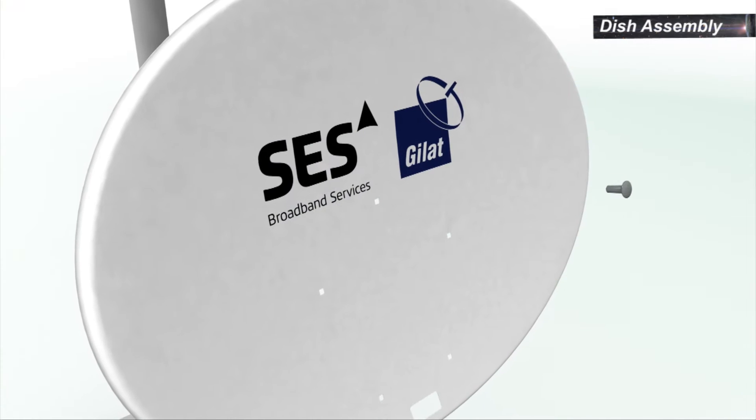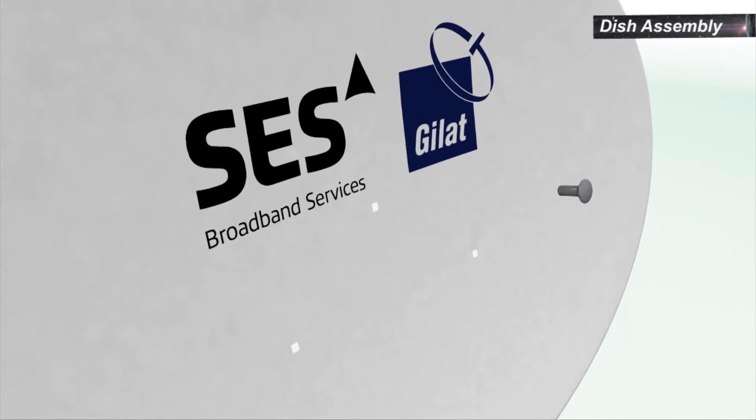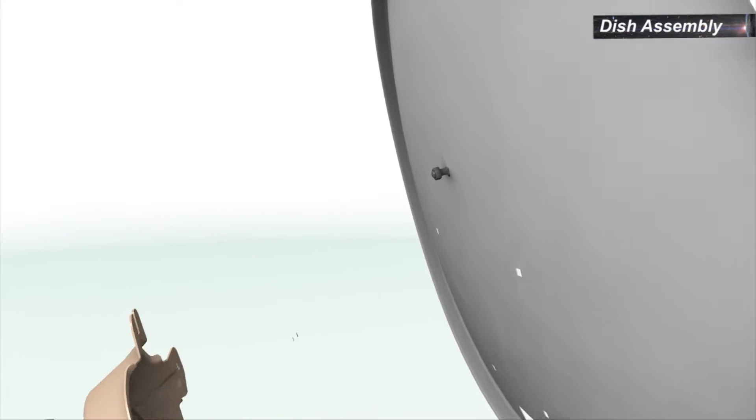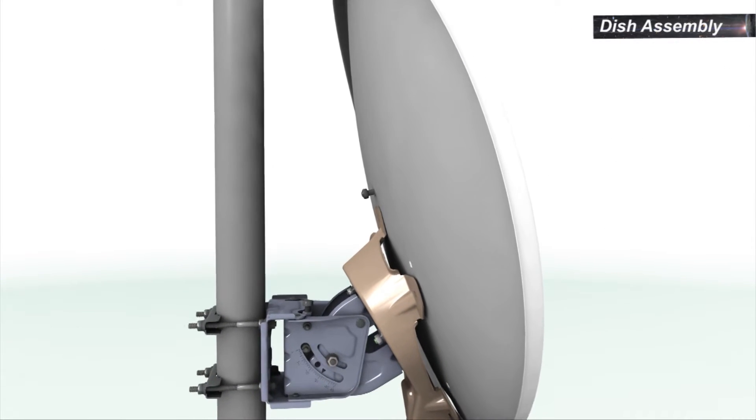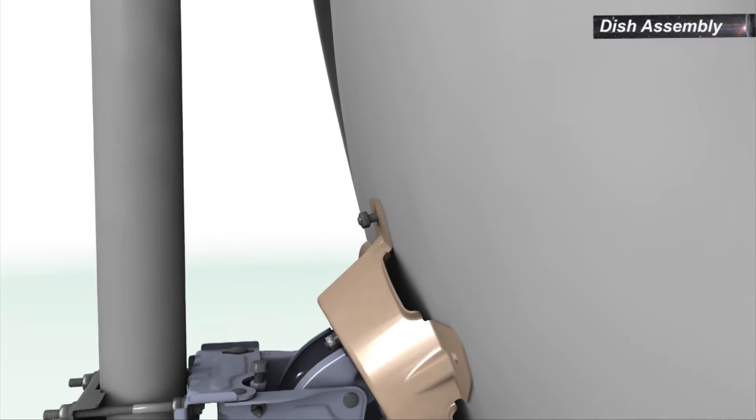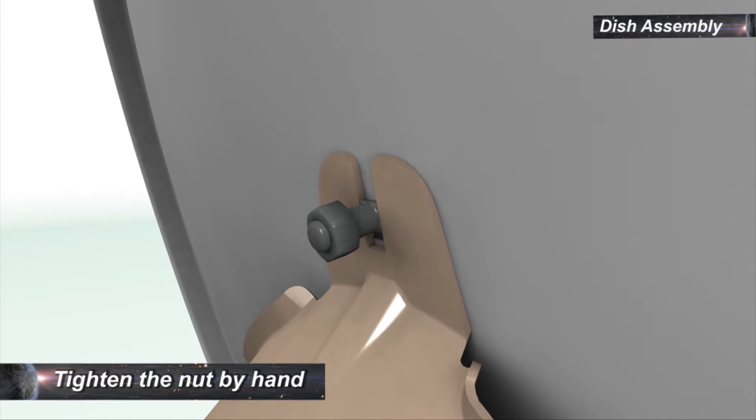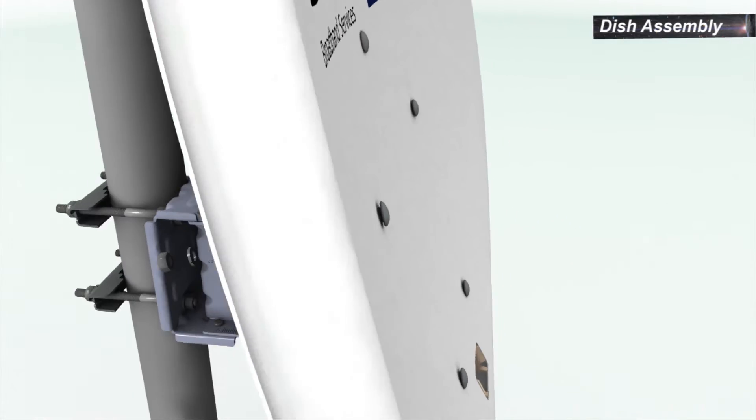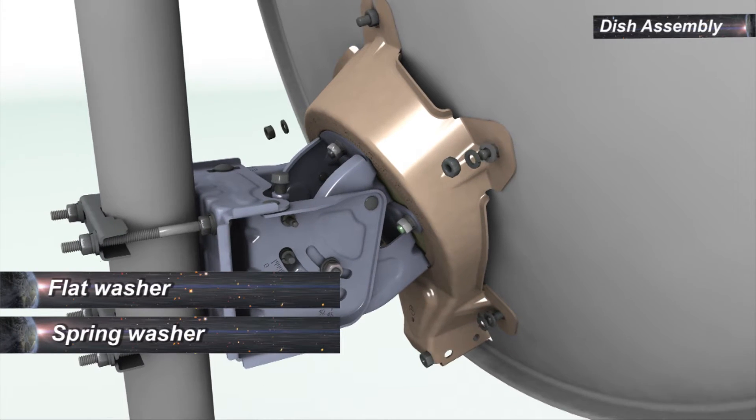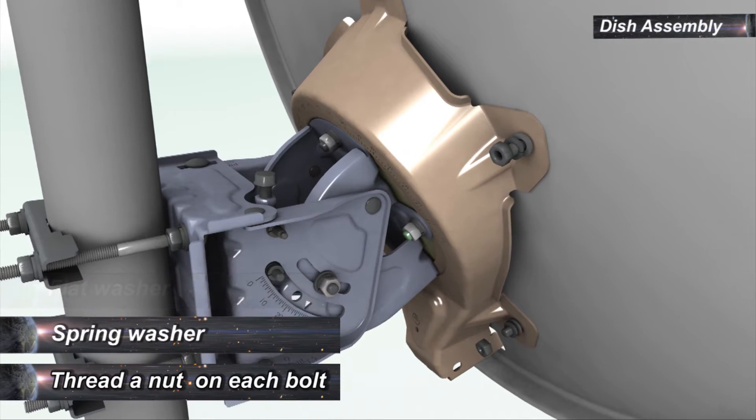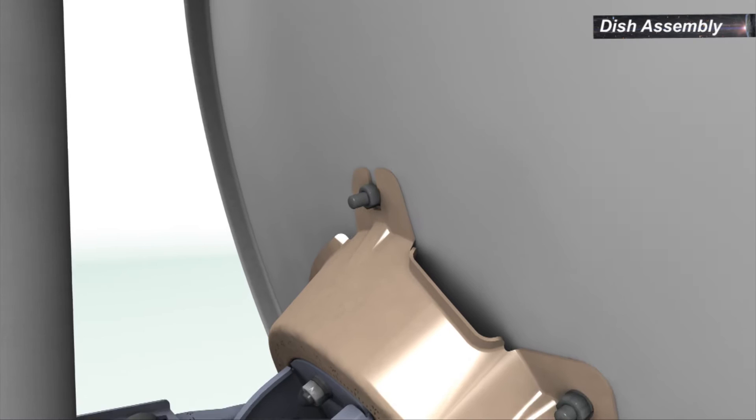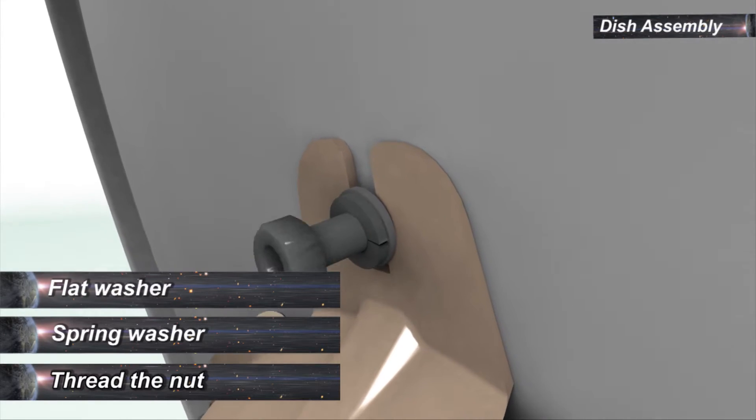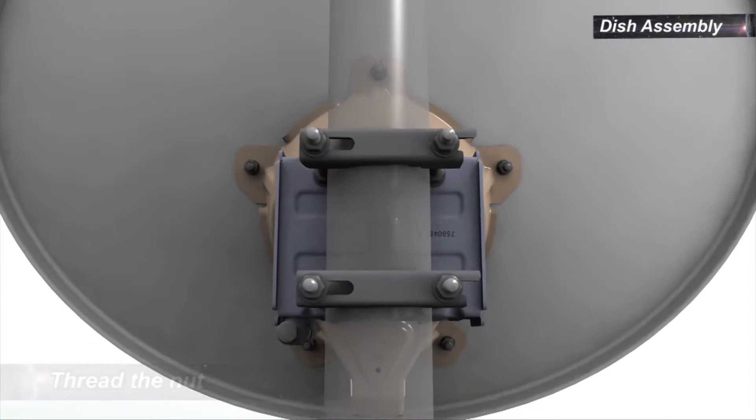Insert a bolt into the uppermost hole of the reflector from the concave side. Thread a nut halfway onto the bolt. Bring the reflector in contact with the back bracket and move it down so that the bolt enters the U-slot of the back bracket. Tighten the nut by hand. Insert the remaining four bolts to connect the reflector with the back bracket with flat washers, spring washers and nuts. Remove the nut from the bolt in the U-slot. Place a flat washer, a spring washer, then replace the nut. Tighten all five nuts.